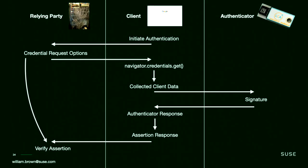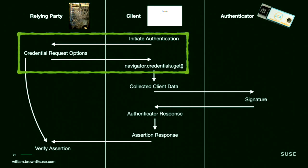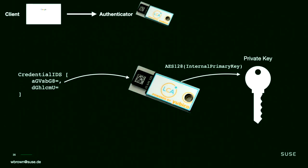The way we allow credentials to work with an infinite number of sites: when the browser initiates authentication from the relying party and the client says 'I want to log in as William,' the relying party provides the list of credential IDs William has ever logged in with. These credential IDs are a Base64 blob — actually an encrypted blob encrypted with the internal primary key of your device using AES. If your authenticator can decrypt that, it now has the real private key in memory and can use it for WebAuthn operations.